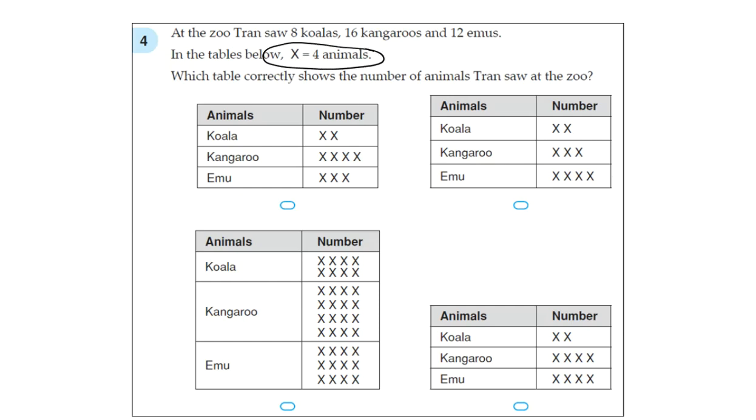So in terms of koalas we will have 2Xs, because 8 divided by 4 is 2. For the kangaroos we'll have 4Xs, because 16 divided by 4 equals 4. For the emus we'll have 3Xs, 12 divided by 4 equals 3. So this has 2Xs, this has 4 for the kangaroo, and 3 for the emus. So this is our answer.